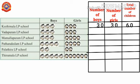Next, Wadapuram LP school. In Wadapuram LP school, 30 boys and 30 girls are there. So the total number of children in Wadapuram LP school is 30 plus 30 equals 60. Next, Mamalapuram LP school. In Mamalapuram LP school, 30 boys and 40 girls are there. So the total number of children in Mamalapuram LP school is 30 plus 40 equals 70.